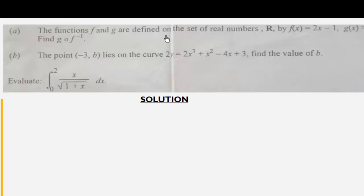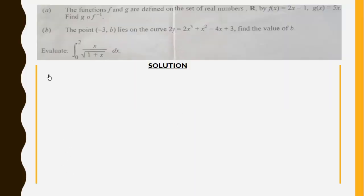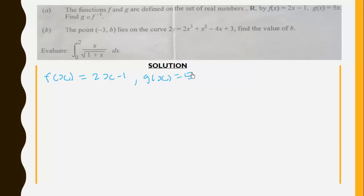Functions f and g are defined on the set of real numbers by f(x) = 2x - 1 and g(x) = 5x. Now we are supposed to find g∘f⁻¹(x).